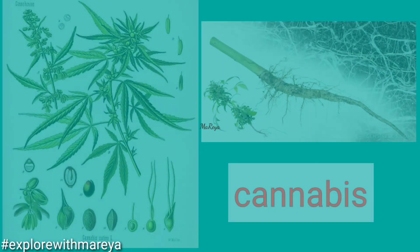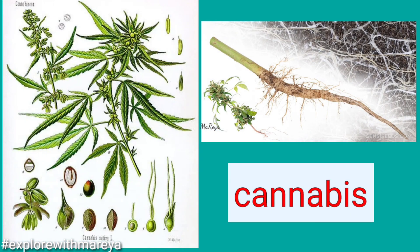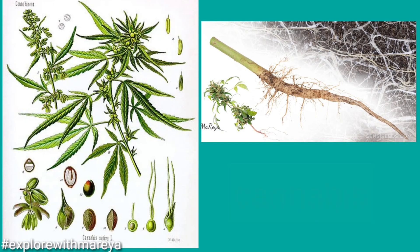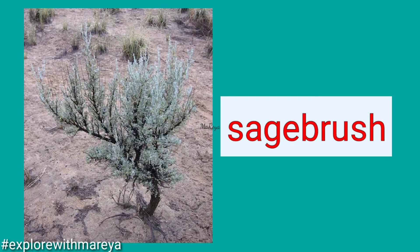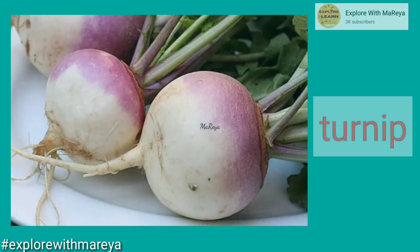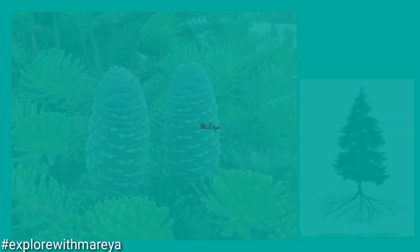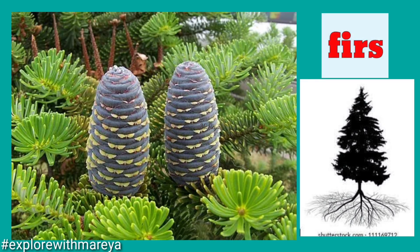And the cannabis. A sagebrush has a taproot, as well as the turnip. Don't forget to subscribe to my channel. And as well as firs — it has a taproot.